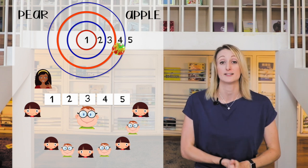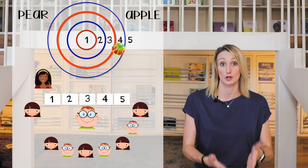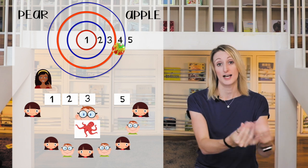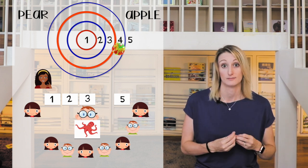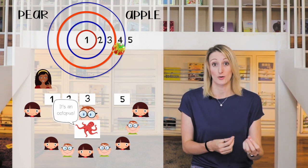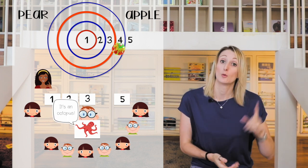Whatever number circle they hit, they find the matching flashcard and show the rest of the class. The whole class as a group then asks that student the target question — for example: Jimmy Jimmy what's that? The student in the middle then answers that question, and if they answer correctly they get one point for their team. In this example I've used the question 'what's that?' but of course this can be adjusted to suit any sentence structure that you might be teaching.